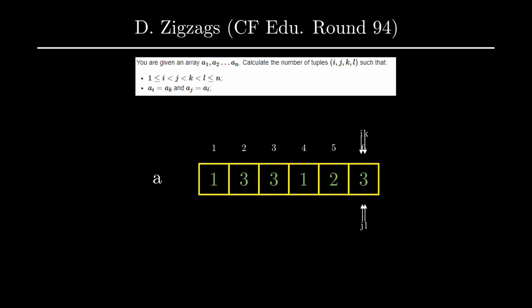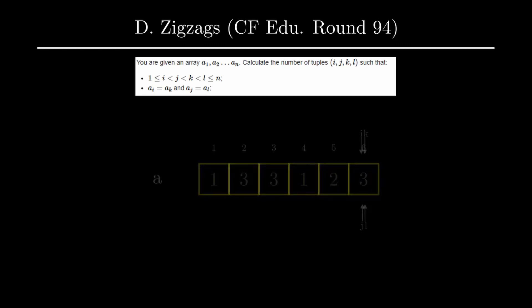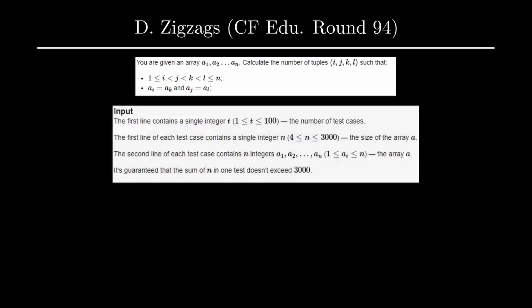Let's take a look at the constraints: n has to be between 4 and 3000, so we need an O(n²) approach to solve this problem. If you look at the condition carefully, you might realize that we need only two different things — that is, we need only a[i] and a[j].